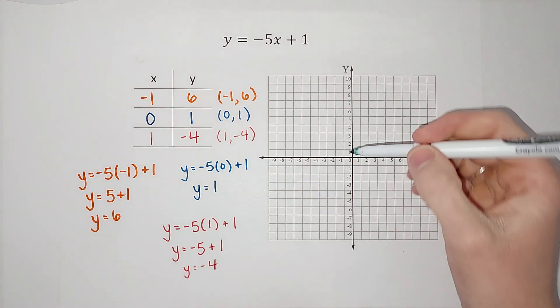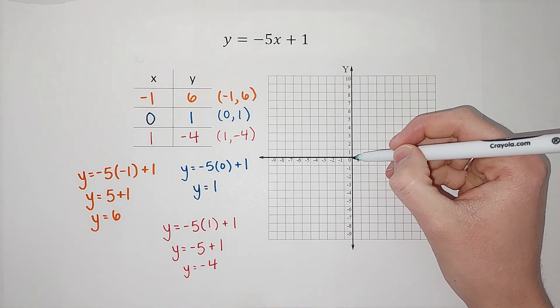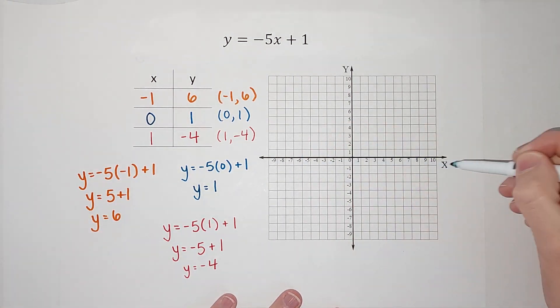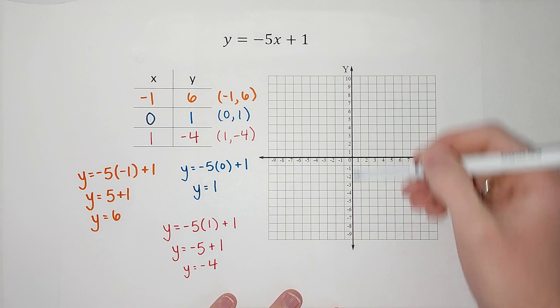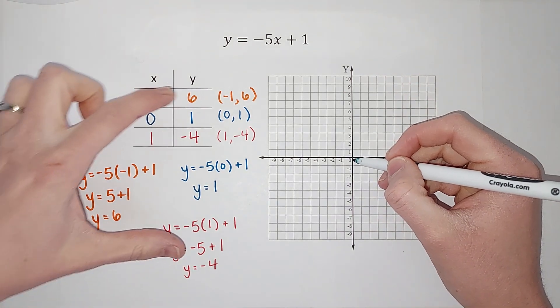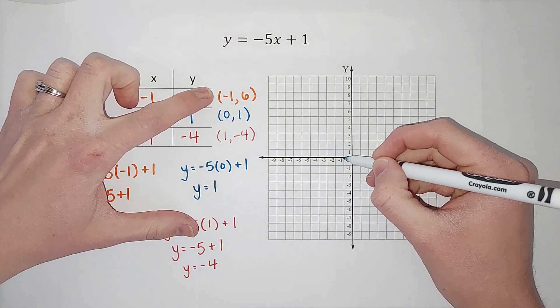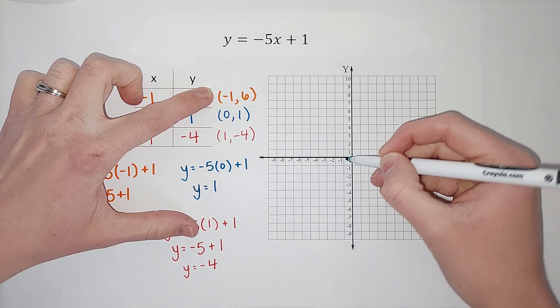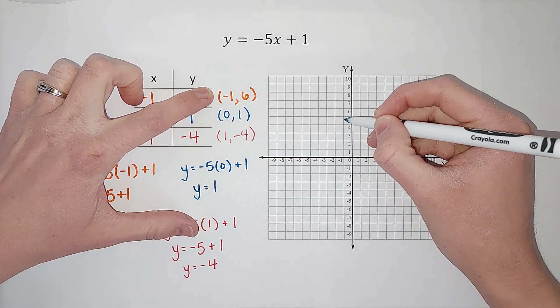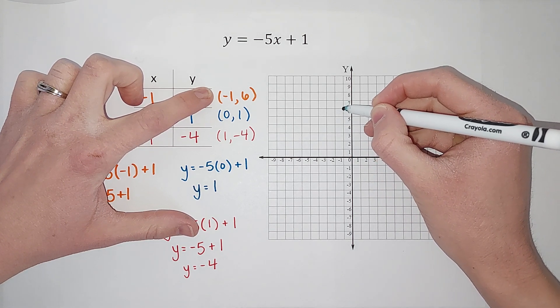We always start at zero, zero. And X is left and right, Y is up and down, right? So X is negative one, so I'm going to go to negative one. And then Y is six. So I'm going to go one, two, three, four, five, six, right there and put a point.